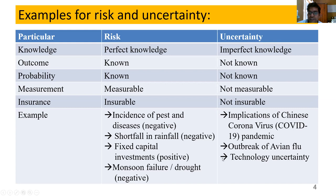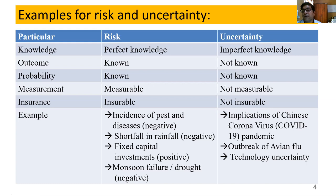Technology uncertainty: fixed capital investments like greenhouse represent positive risk because the farmer takes the risk of investing a huge amount. But it is also uncertainty in terms of technology — if some technology like hydroponics is proven in some areas and you try to replicate it in other areas but it doesn't give proper results, we don't know what's happening. The same technology that gave good results elsewhere is not replicating — that is technology uncertainty. So we have both risk and uncertainty.